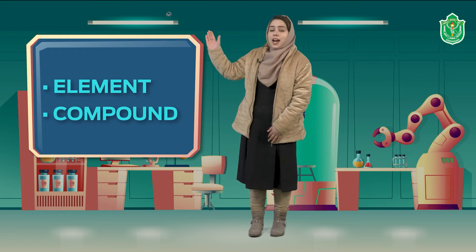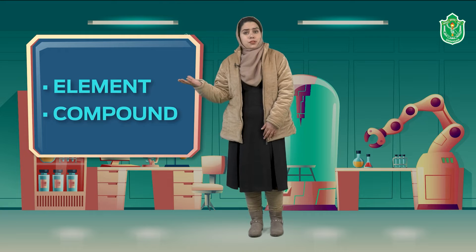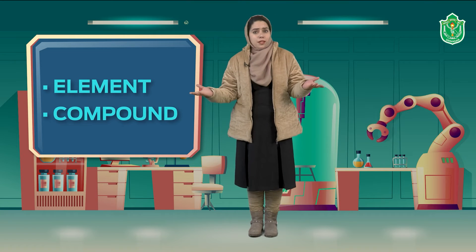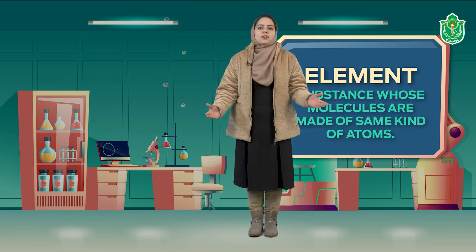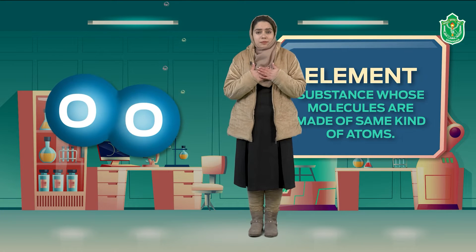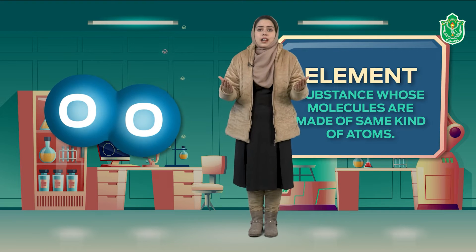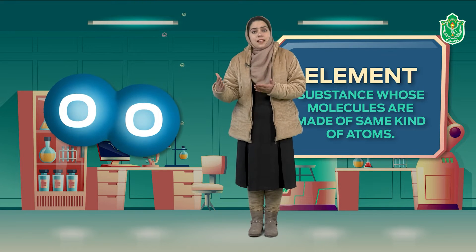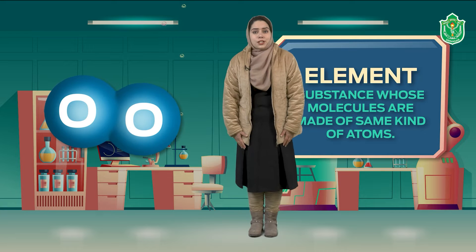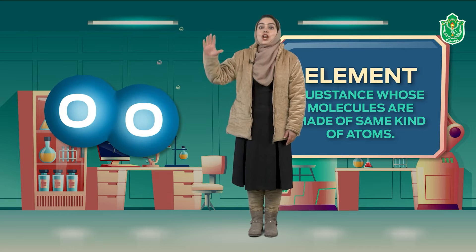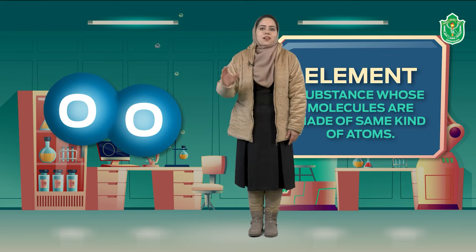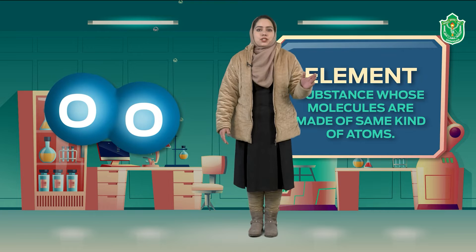Now children, molecules are of two different types: elements and compounds. What is the difference between an element and a compound? Both of them are molecules. An element is made up of the same types of atoms. For example, oxygen — we cannot live without oxygen, we breathe it in. This oxygen gas is made from oxygen molecules, but each oxygen molecule is made up of only oxygen atoms — no other atom is present. So we can say it is an element, a pure substance.